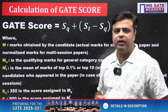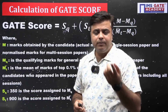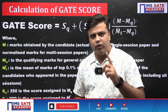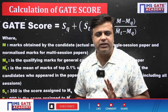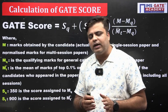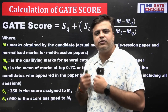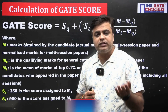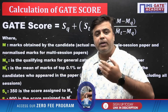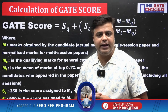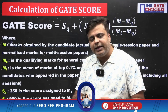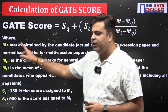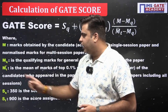Here, M is the actual marks obtained by the candidate. For EC students, only one session of the exam is conducted, so their actual marks are used directly. For subjects like Civil and CS where multiple sessions are conducted, normalized marks are used to calculate the GATE score.